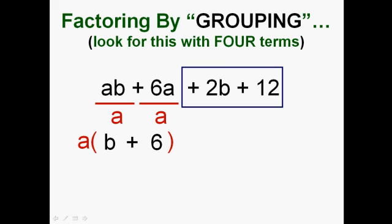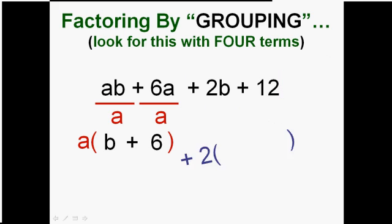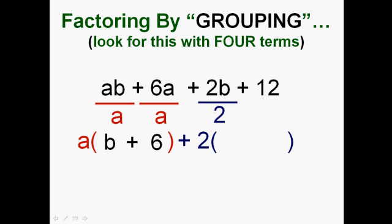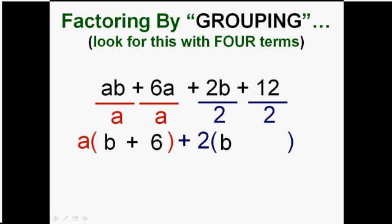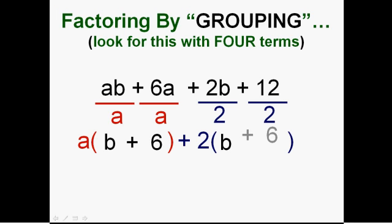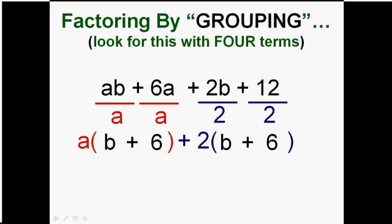Now let's do the second group. What do you think the greatest common factor between 2b and 12 is? Well, hopefully you can figure that it's 2. And if I take 2 out, I'm going to get a nice surprise. 2b divided by 2 is b and 12 divided by 2 is plus 6.